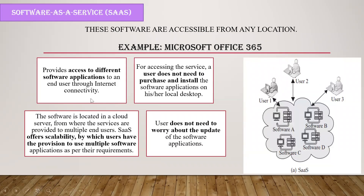Software as a service, or SaaS — what is it? You can take Microsoft Office 365 as an example. This is a kind of software that can be accessed by multiple users sitting at any location. SaaS provides different software applications, not hardware applications. All those software applications can be used when there is internet connectivity.